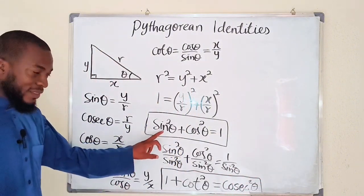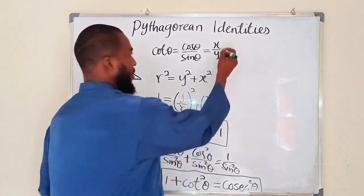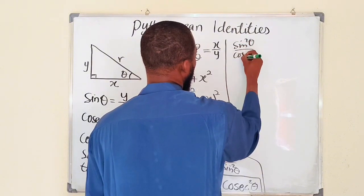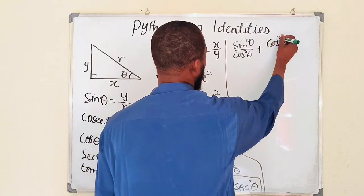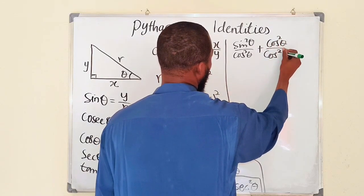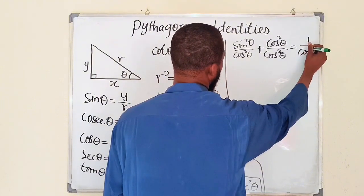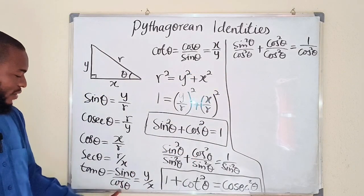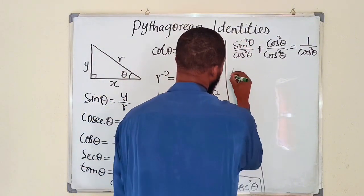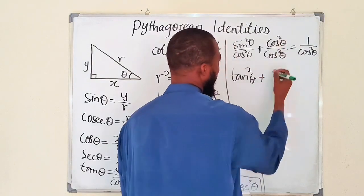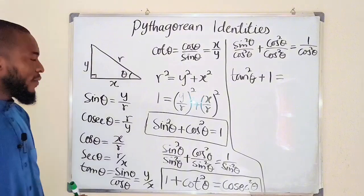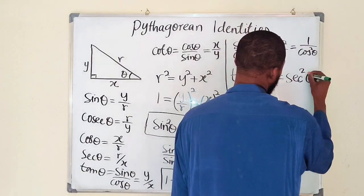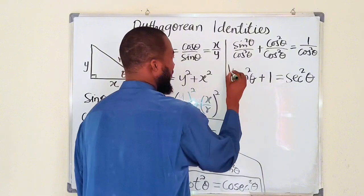For the last identity, we divide the first identity by cosine squared theta. Sine squared theta divided by cosine squared theta gives us tangent squared theta. Cosine squared theta divided by cosine squared theta gives us one. And one divided by cosine squared theta — since one over cosine is secant — gives us secant squared theta. So the identity is: tan²θ + 1 = sec²θ.